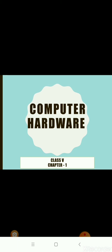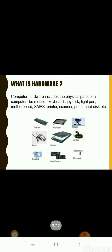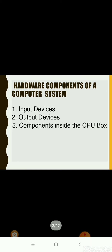What is hardware? Computer hardware includes the physical parts of a computer. It means the components that can be seen and touched, like mouse, keyboard, joystick, light pen, graphic tablet, printer, scanner, etc.